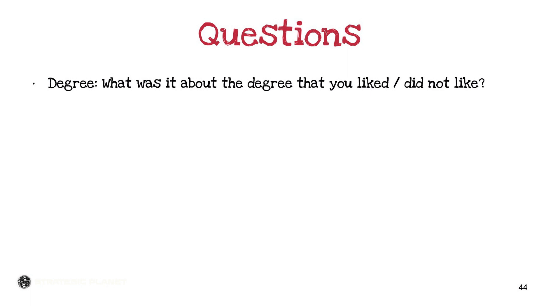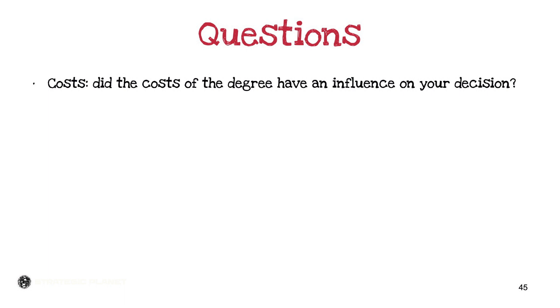For the university category, you could ask: 'What is it about the university that you like or do not like?' It doesn't matter if the individual ended up at a different university — they may like Leeds Beckett but went elsewhere because their grades weren't high enough. For the degree category, you could ask: 'What was it about the degree that you liked or did not like?' — using similar questioning to the university. The fifth question around costs could be: 'Did the costs of the degree have an influence on your decision?' — since location can affect overall cost.